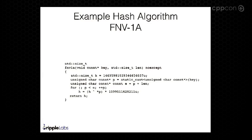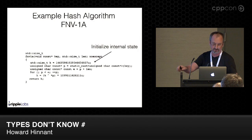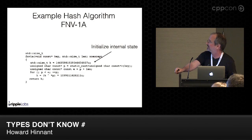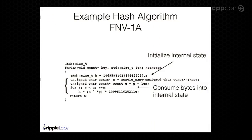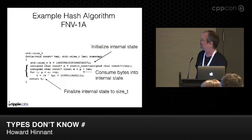Let's go back to FNV1A. The initialization state is just one line: here's our internal state, a single size_t, and to initialize it we simply set this number into it. The next four lines are the phase where you consume bytes into the internal state. And then finally, this is our finalization stage — it's the identity operation. To finalize this algorithm, you simply return the single size_t as the hash code. Other hash algorithms will have much more complicated finalization states, but here we get identity.